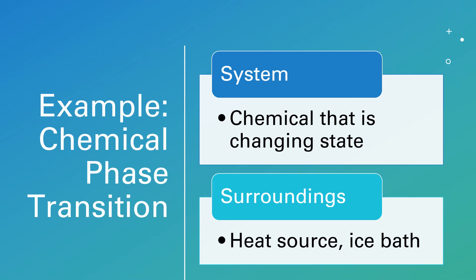Let's look at the system versus the surroundings for a different scenario — the scenario of a phase transition. A phase transition means that we're converting a solid into a liquid or a gas, some sort of conversion among those three states of matter. The system is the chemical that's changing state. The surroundings are everything else in the universe, such as the heat source you are applying to make this state change happen, or the ice bath that you are applying.